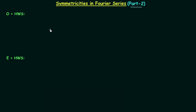In odd plus half wave symmetry, there are two types of symmetries: the first is odd symmetry and the second is half wave symmetry. We will analyze the effect on Fourier series expansion because of these two symmetries individually and then combine all effects to get the final conclusion. Starting with half wave symmetry — whenever the given signal is half wave symmetric, the Fourier series expansion will contain only odd harmonics.